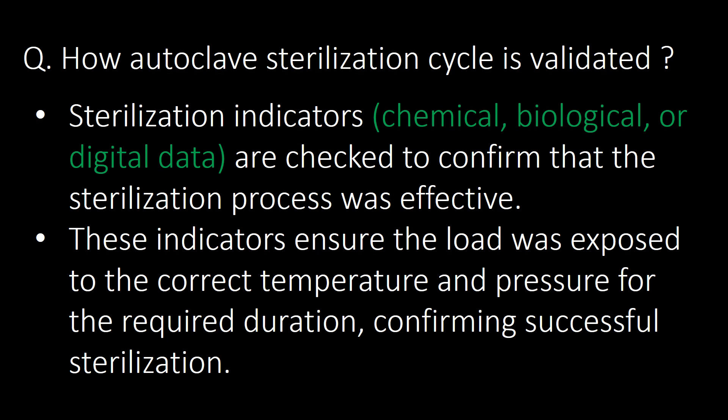How is an autoclave sterilization cycle validated? Sterilization indicators — chemical, biological, or digital data — are checked to confirm that the sterilization process was effective. These indicators ensure that the load was exposed to the correct temperature and pressure for the required duration, confirming successful sterilization.